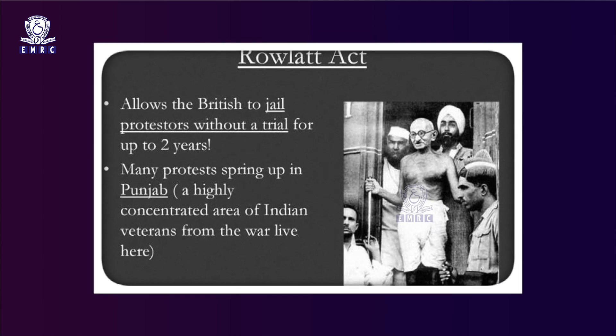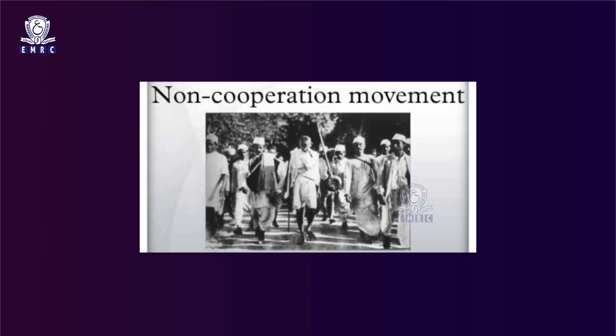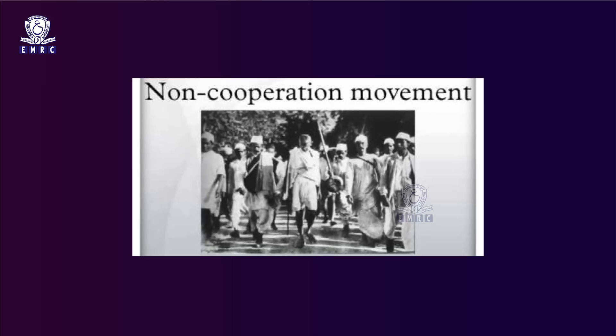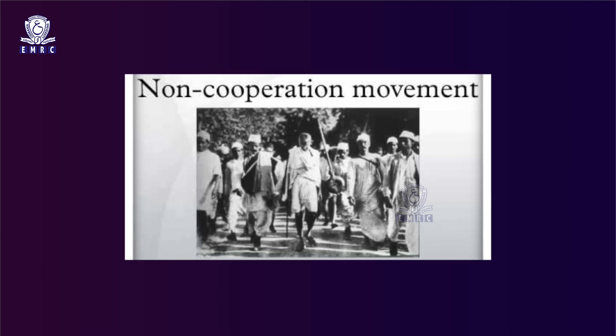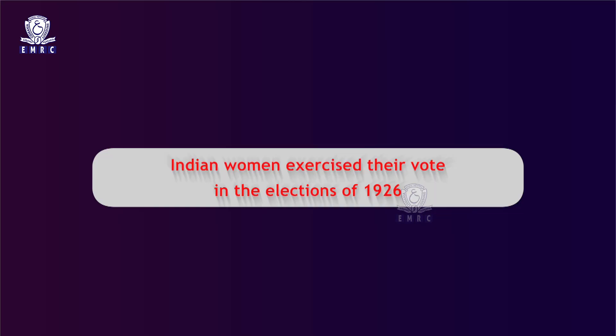Gandhiji launched an All India Satyagraha in 1919 against the provocative enactment of the Rowlatt Act. Women took out processions, propagated the use of khadi, and even courted jail. Though a few number of women were arrested, a beginning was made. The non-cooperation movement in 1920 awakened the women of all sections and imparted first lessons in Satyagraha. After the struggle for franchise, for the first time Indian women exercised their vote in the elections of 1926.